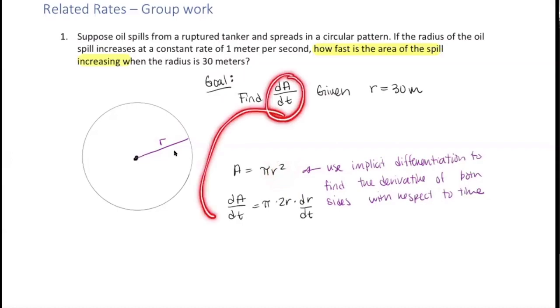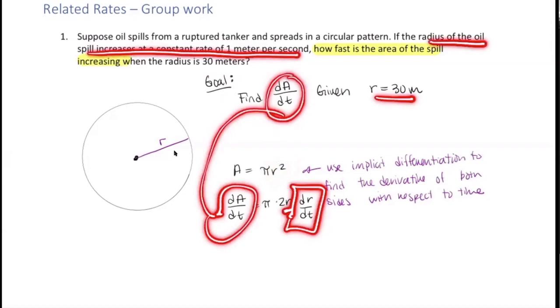Let's look at this. We have our goal right here. So we just need to put our number in for R, which is here. And then dR/dt, where is that? We can find that in the problem itself. The radius of the oil spill increases at a constant rate of 1 meter per second. That is dR/dt.